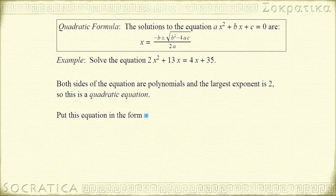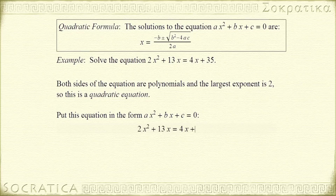But first, we have to write this equation in the form ax squared plus bx plus c equals 0. To do this, we want to move everything from the right-hand side to the left-hand side — that is, we want to cancel everything on the right-hand side so we're left with just 0 on the right-hand side. Once we do that and clean up the left-hand side, it'll be in the right form.